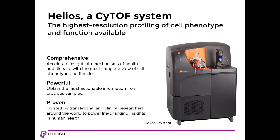By enabling routine analysis of greater than 50 parameters per cell, Helios offers the most complete and comprehensive view of cell phenotype and function in a cytometric platform available today. The power of this technology allows you to collect the most actionable information from every cell in every precious sample. This technology is now available at over 200 sites worldwide and is a key technology in multiple clinical trials.